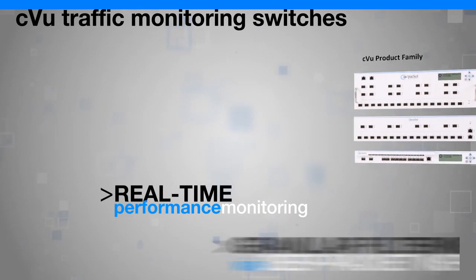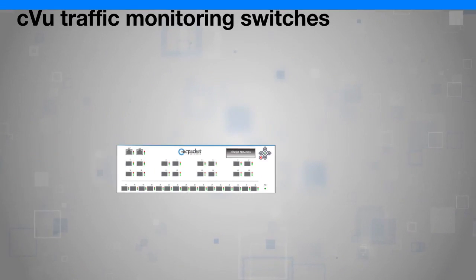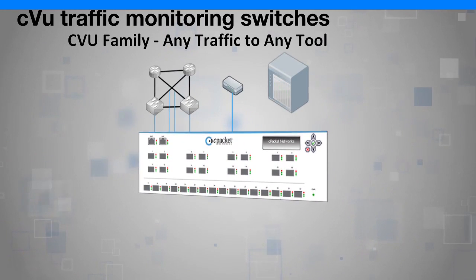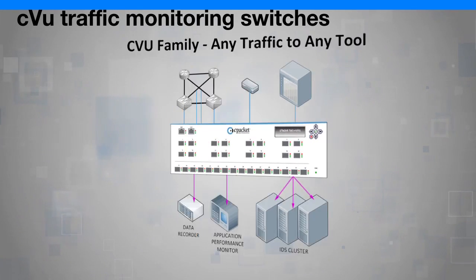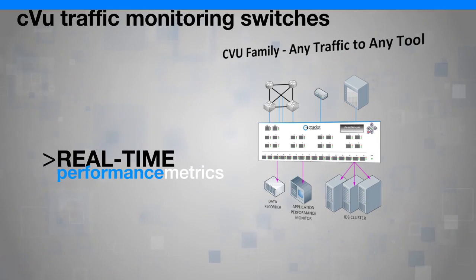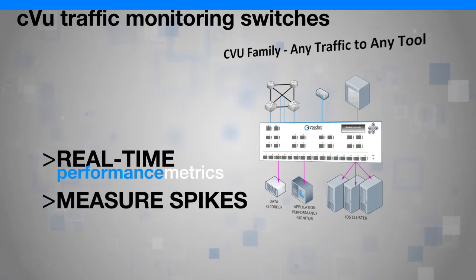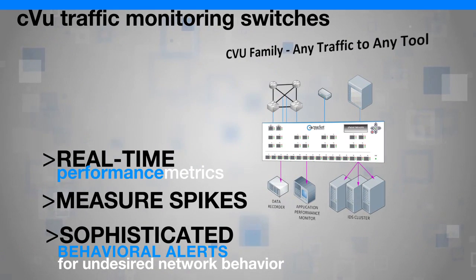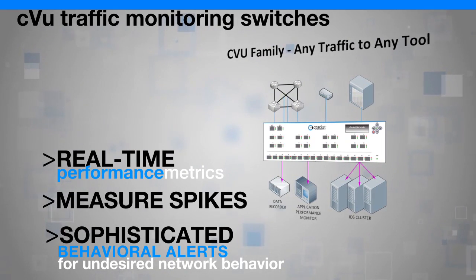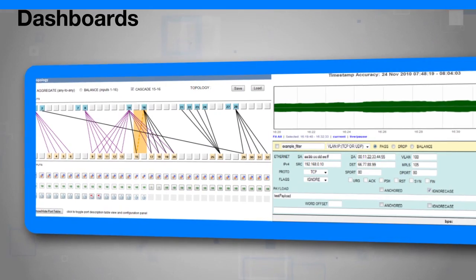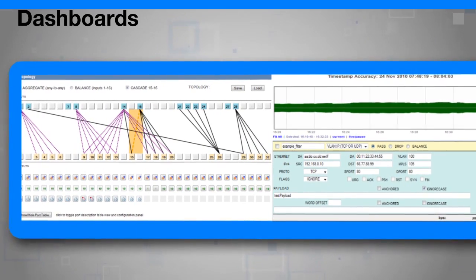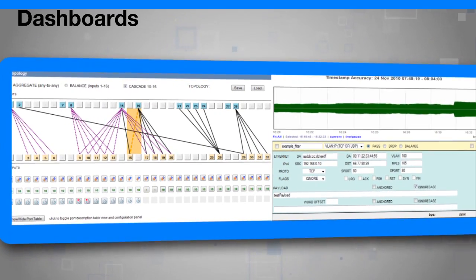With a CView switch, users can configure any-to-any port forwarding topologies, utilize real-time performance metrics, measure spikes, and define sophisticated behavioral alerts for undesired network behavior — all with a user-friendly dashboard for automatic triggers, alerts, and diagnostics that can help you pinpoint issues instantaneously.